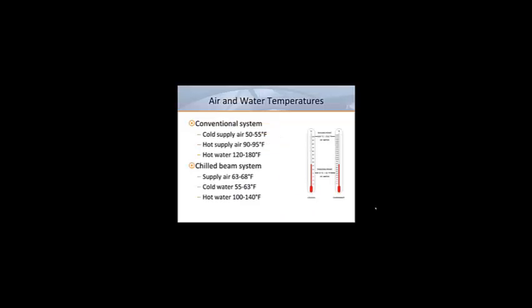Now let's look at temperatures. In a typical office situation, the desired room temperature is 72 to 74 degrees Fahrenheit. In a conventional system with an air handler and overhead diffusers, the supply air for cooling is 50 to 55 degrees, and the supply air for heating is 90 to 95 degrees. If the supply air must be reheated by a terminal unit by means of a hydronic coil, it would typically be supplied with 180 degree water.